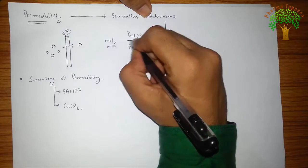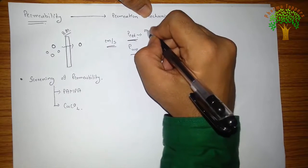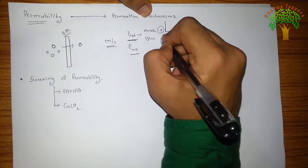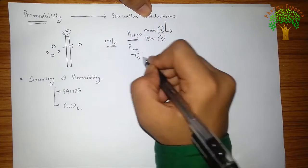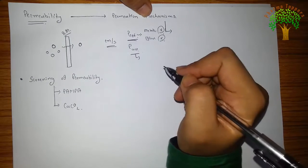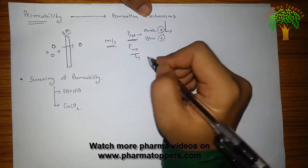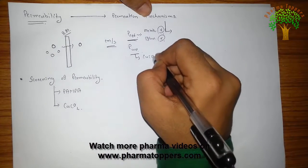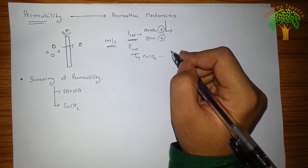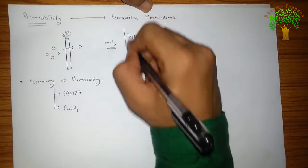So it is the efficient permeability in which metabolism is not considered, efflux is not considered. While apparent permeability, it is generally which is checked in the inverted gut sac, which is ex vivo technique or the CACO-2 cell line, which includes the transporters and all that. So this is known as the apparent permeability.